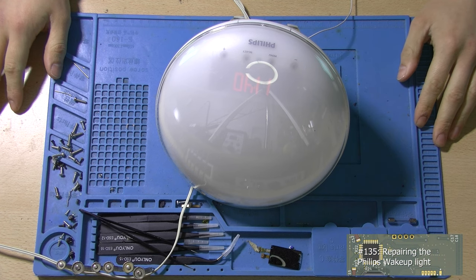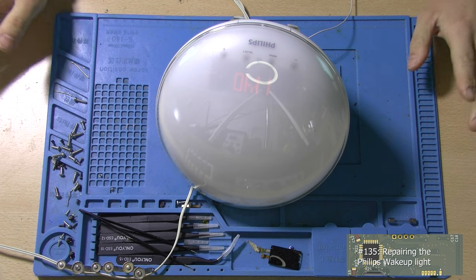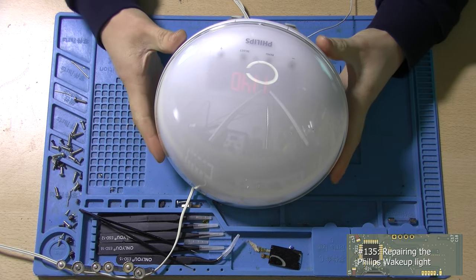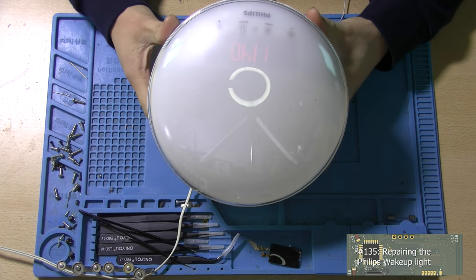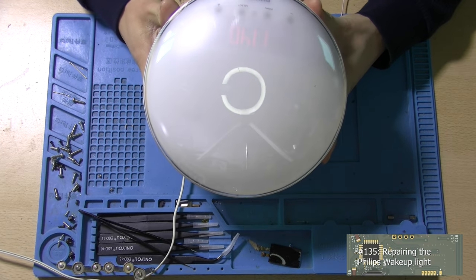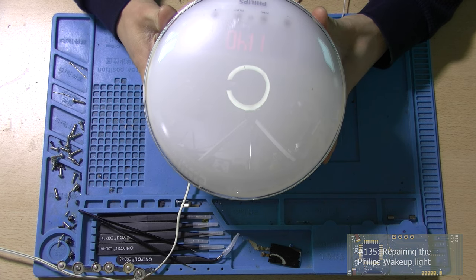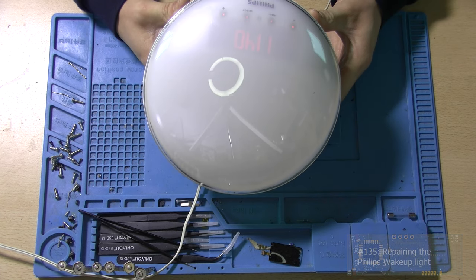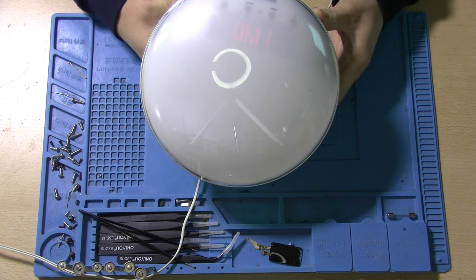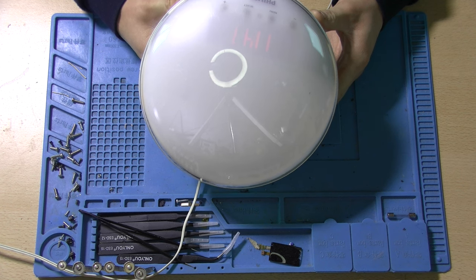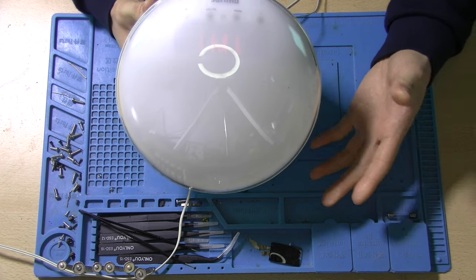Hey guys, this is Tim from Tim's Electronics Lab and welcome back to a new video. In this video we're hopefully going to repair this Philips wake-up light. It's a light that supposedly wakes you up better. This light simulates the sun when waking you up. You set a timer and then it wakes you up gradually by increasing the light output.